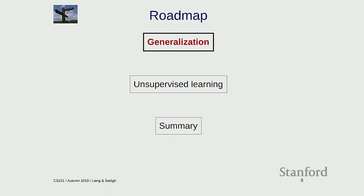There are two topics today. I want to talk about generalization, which is a pretty subtle but important thing to keep in mind when doing machine learning. Then we're going to switch gears and talk about unsupervised learning, where we don't have labels but we can still do something.